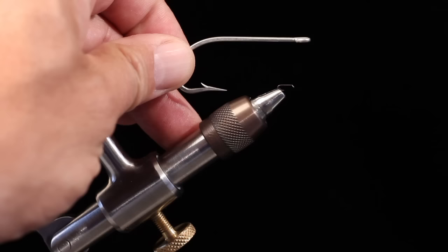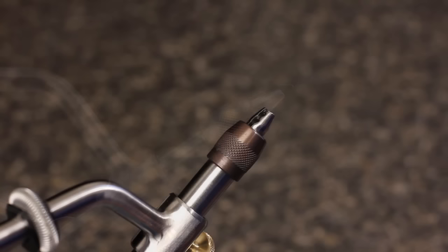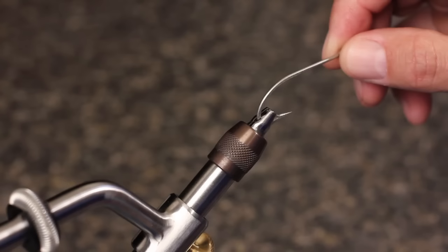The vise is able to hold such a wide range of hooks because of various size grooves in the jaws. The widest groove toward the back is best for very large hooks.